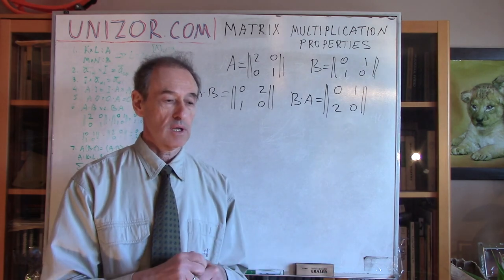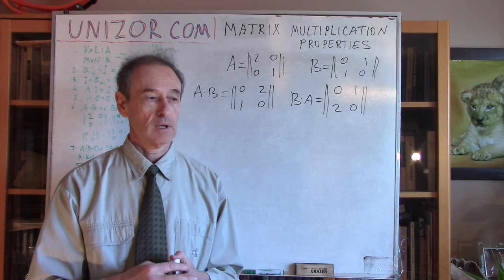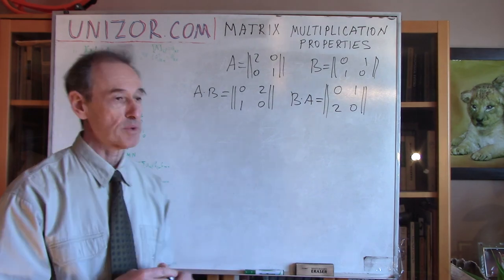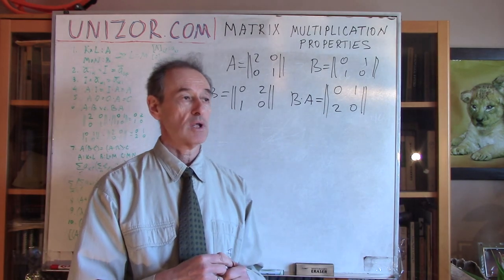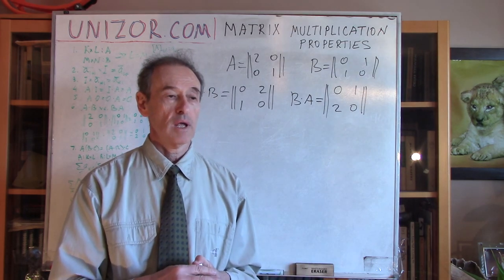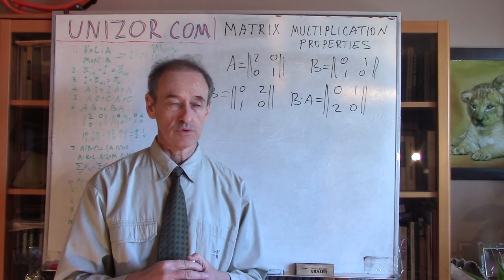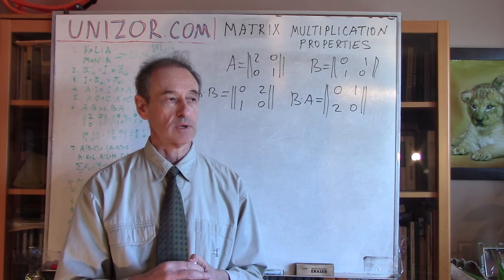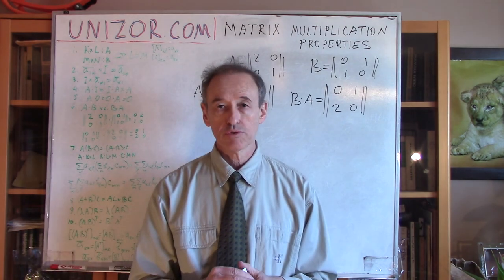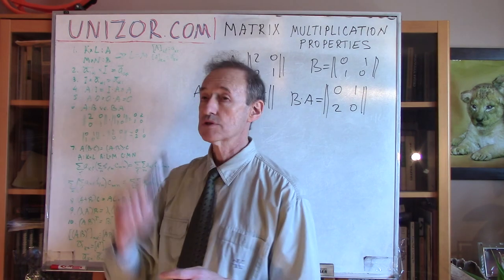That was the first part of my theoretical foundation explaining different properties of the operation of multiplication. The second part will cover some other properties, and that will probably conclude my theory about matrices, after which we will go to problems. I suggest you read exactly the same material in the notes for this lecture on unizor.com.